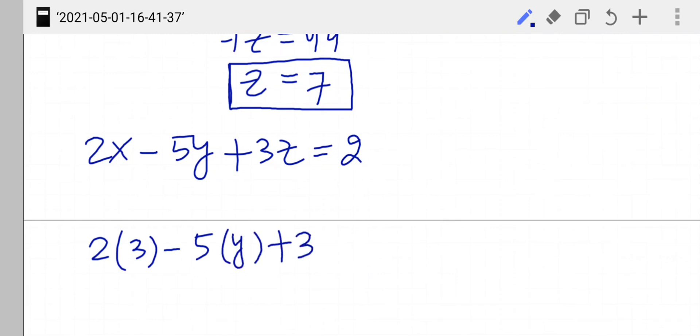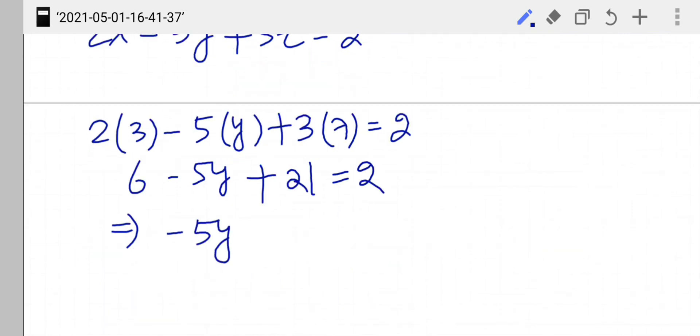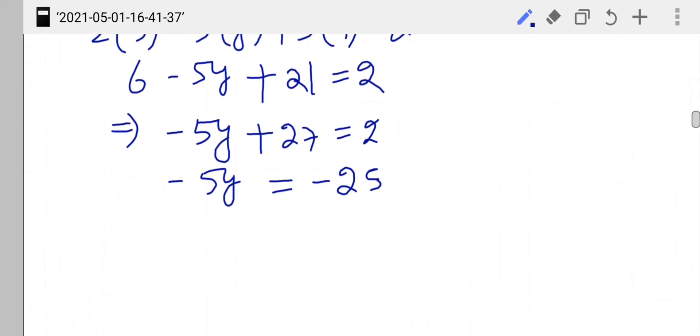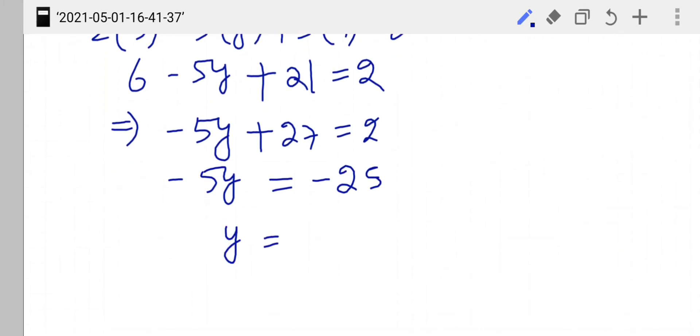Now x is 3, the value of y we don't know, but the value of z we know, that is 7. All equals to 2. So 6 minus 5y plus 21 equals to 2. Minus 5y, so here 21 plus 6 is 27, equals to 2, minus 5y equals to minus 25, and hence y equals to 5.